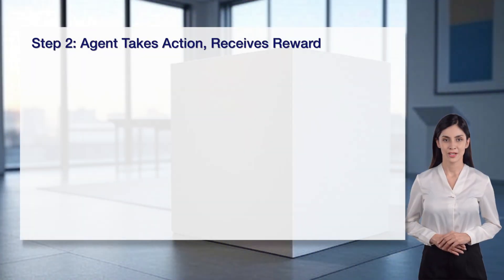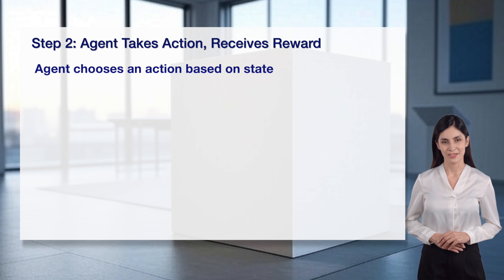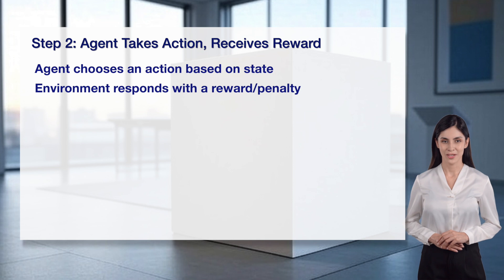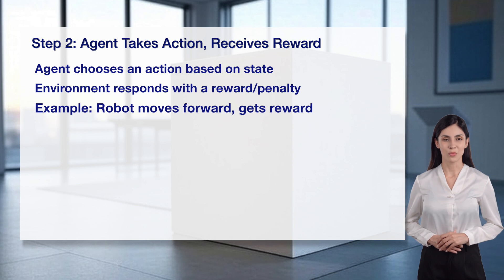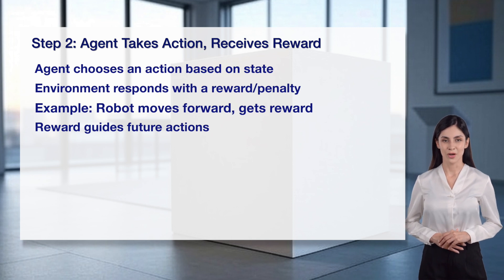Step 2 is where the agent takes an action and receives a reward. The agent chooses an action based on the state it observed, like deciding which way to move. The environment responds by giving a reward for good actions or a penalty for bad ones. For example, a robot might move forward and get a reward for progress. This reward or penalty guides the agent's future actions — it's a direct feedback loop that shapes the learning process.